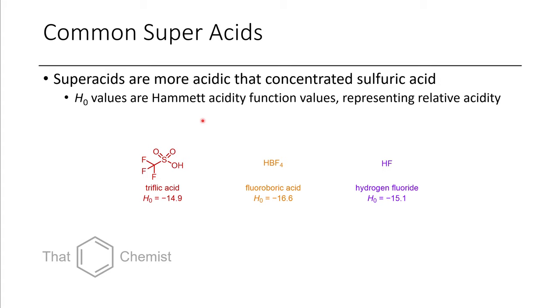So these H0 values that are shown here are Hammett acidity function values, and so these are relative acidities. They're kind of like pKa, but when you're looking at cases that don't include water, because you can only get so protonated in terms of pKa. So it's more useful to talk about relative acidity with these.